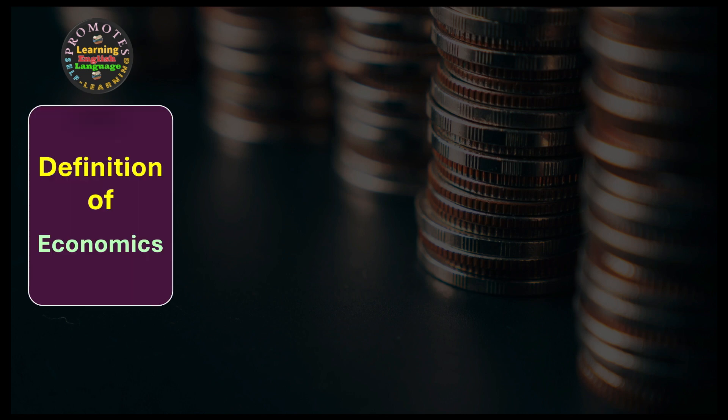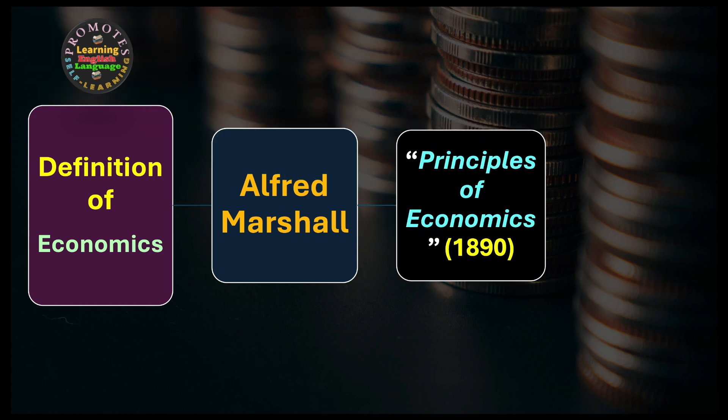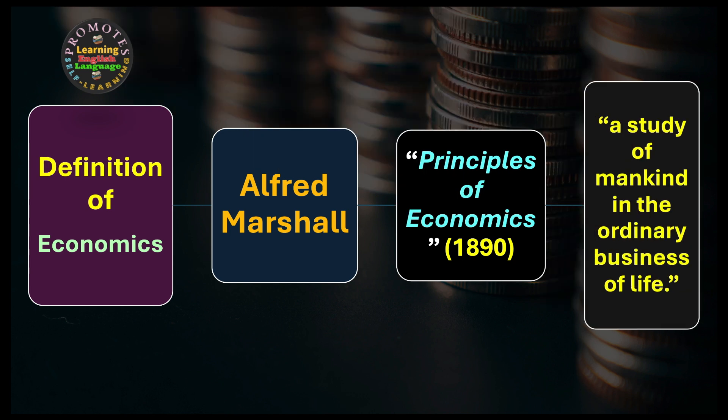Definition number two: as explained by Alfred Marshall in his book 'Principles of Economics' in 1890. He defines economics as a study of mankind in the ordinary business of life. This means economics is all about studying the economic activities of human beings in their day-to-day affairs of life.